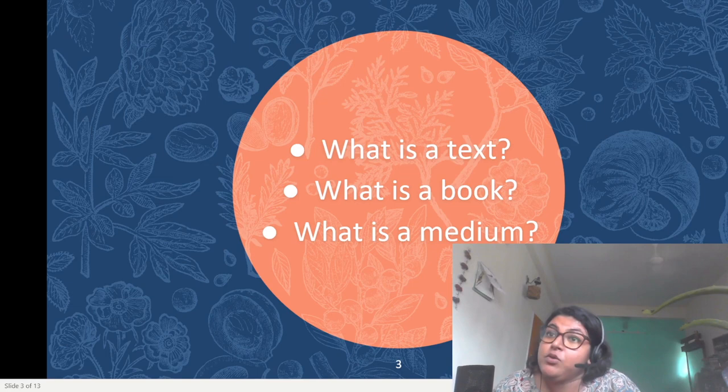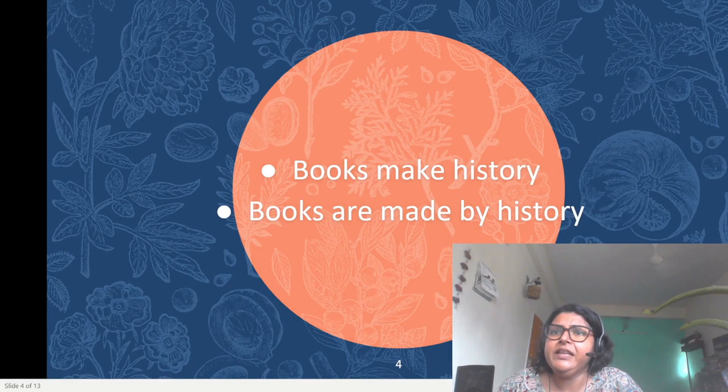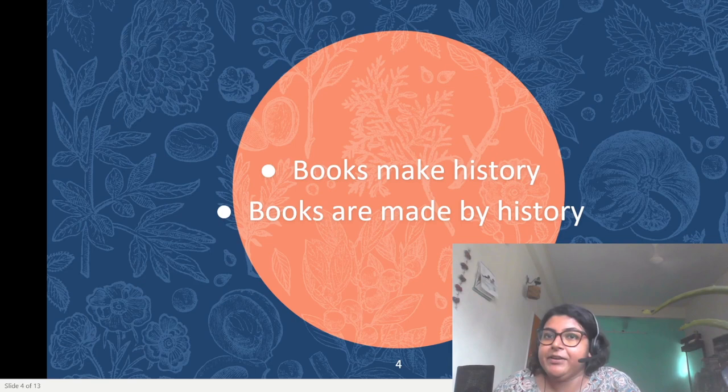Jonathan Rose and Simon Elliot, in their introduction to 'A Companion to the History of the Book' published in 2007, frame the introductory questions of book history somewhat differently. They write: the history of the book is a new scholarly adventure, still in its pioneering phase, which offers an innovative approach to studying both history and literature.